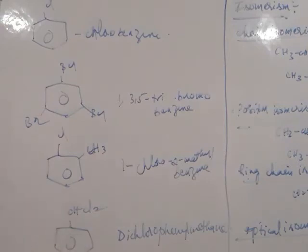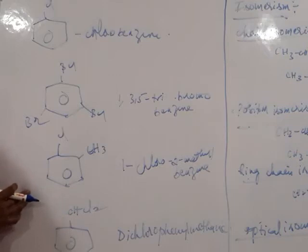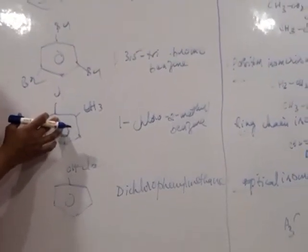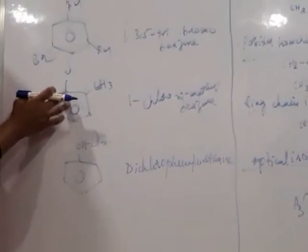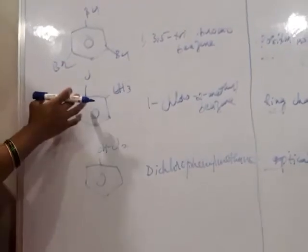Next, both chlorine and methyl group are linked to the benzene ring. Starting from halogen atom containing carbon, this is given first priority. Next substituent, so 1-chloro-2-methyl-benzene.